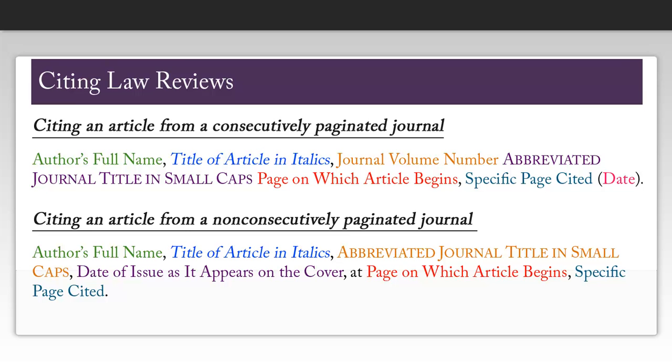The only difference for a non-consecutively paginated journal article is that you will not have a volume number. Instead, after the abbreviated journal name, you will have the date of issue as it appears on the cover of the journal. This might look something like May 2012.